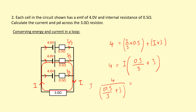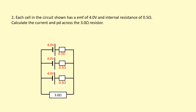Dividing both sides gives a current of 1.26 amps. The voltage across the load is then the current times the resistance of the load: 1.26 times 3 gives 3.8 volts across the load.